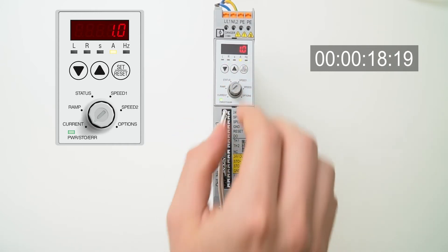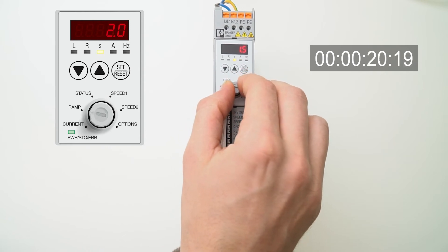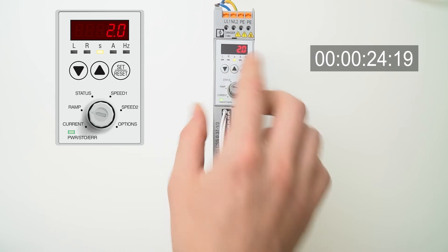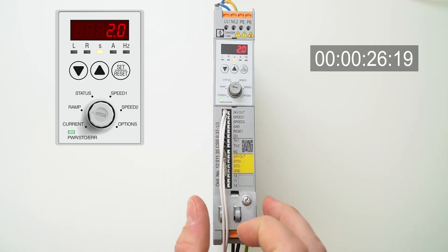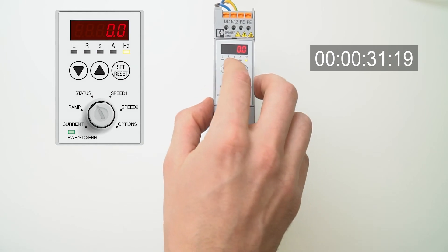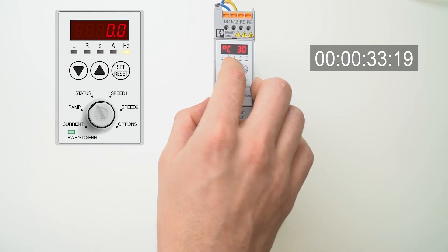You want to change the ramp time? No problem. Change the rotary switch to ramp, change the value with up and down button, press set reset to store the value. If you want to see electrical values of the motor, just switch the rotary switch to status and see the different electrical values that you want to see.